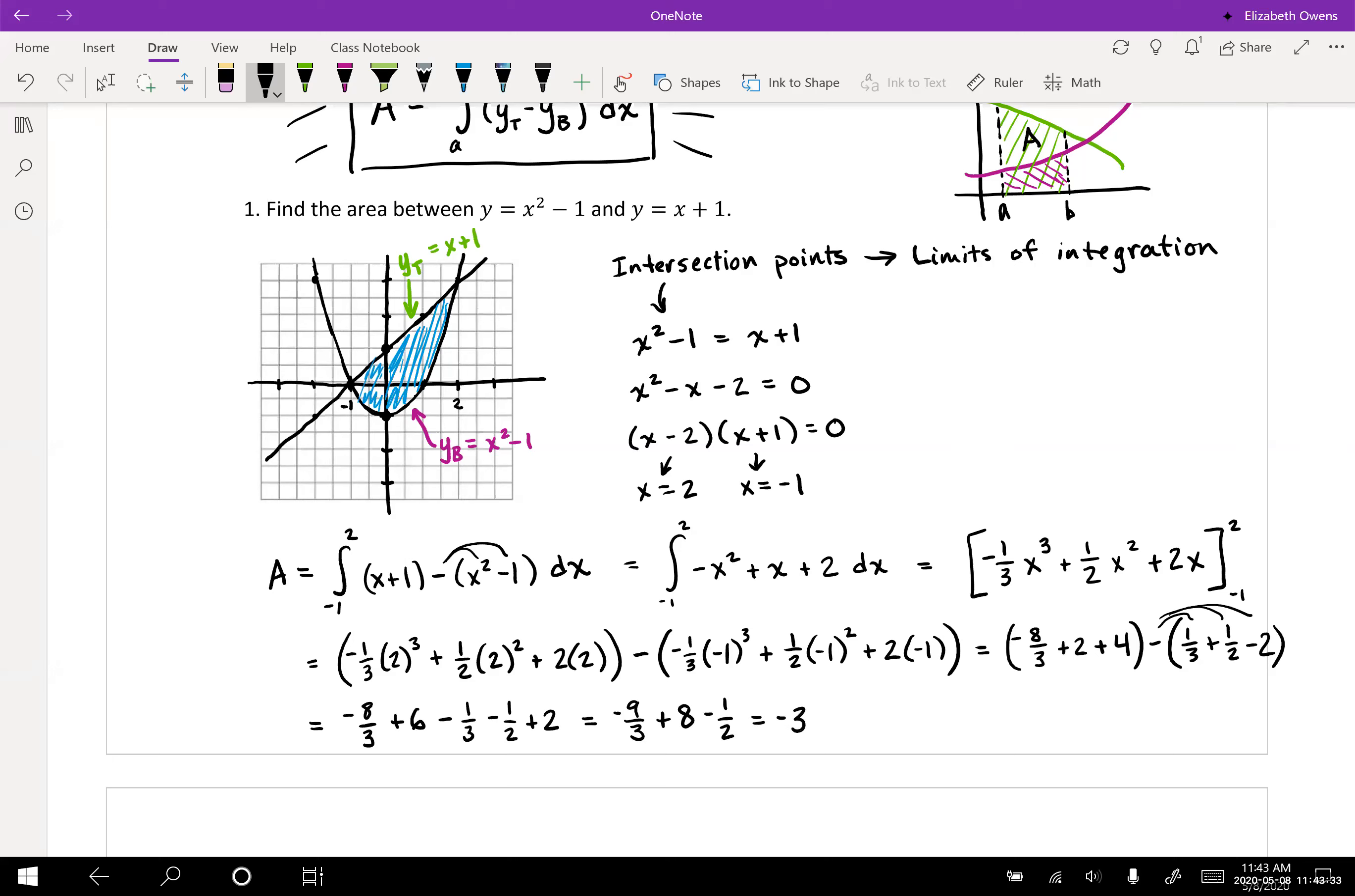So there's negative three plus eight minus a half. That would be five minus one half. So that's four and a half, which is nine halves minus one half equals nine halves.